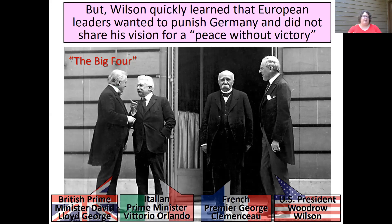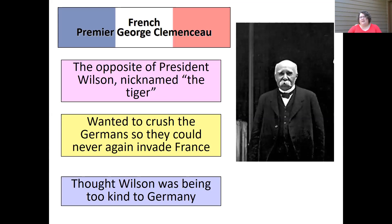Most European leaders — specifically Britain, Italy, France, Belgium — places where the war had been fought and was especially costly — wanted to punish Germany. They didn't want just peace; they wanted Germany to suffer. The French were especially pushing for a harsh punishment. They wanted to crush the Germans, to completely eliminate any possibility that they would ever again invade France. French Premier Clemenceau thought Wilson was being too kind to Germany with his plans for a peace without victory — that they should just work out their differences, let bygones be bygones, and call it a day.